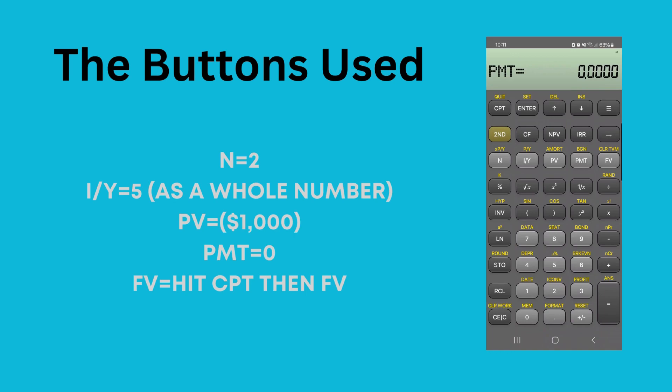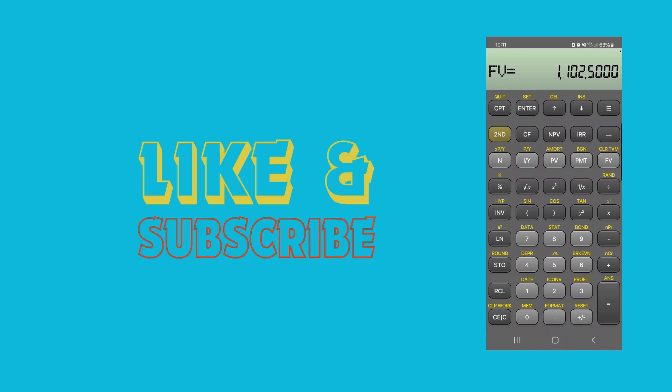Then the final step is we hit the compute button, which is CPT in the top left-hand corner. We hit compute, and then we hit future value. When we do that, we see that at the end of the two years, our CD is going to be worth $1,102.50.